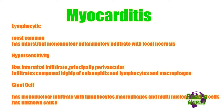In lymphocytic myocarditis, the most common type, there is interstitial mononuclear inflammatory infiltrate with focal necrosis. In hypersensitivity myocarditis, there is interstitial infiltrate — principally perivascular — composed of eosinophils, lymphocytes, and macrophages. In giant cell myocarditis, there is mononuclear infiltrate with lymphocytes, macrophages, and multinucleated giant cells.